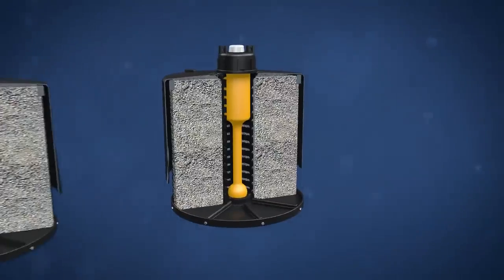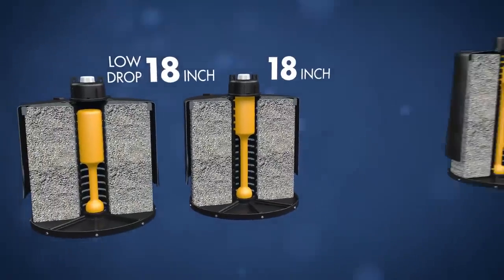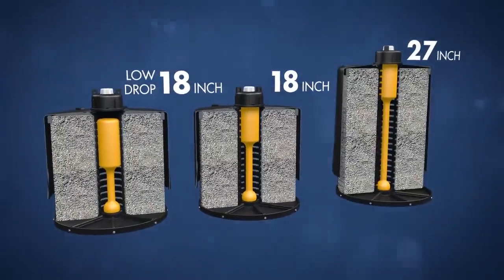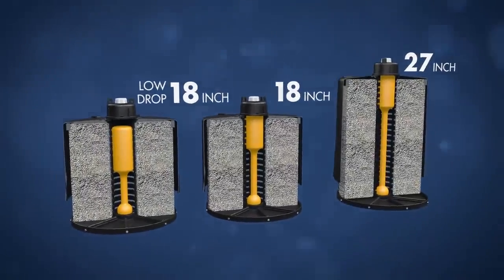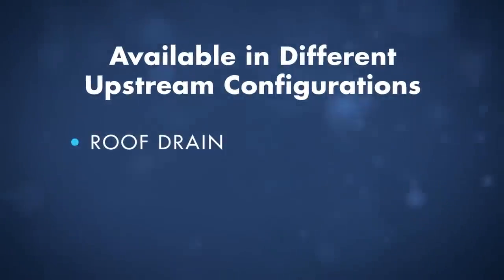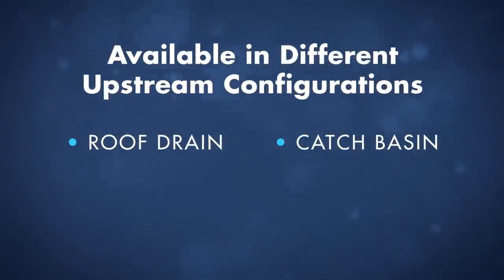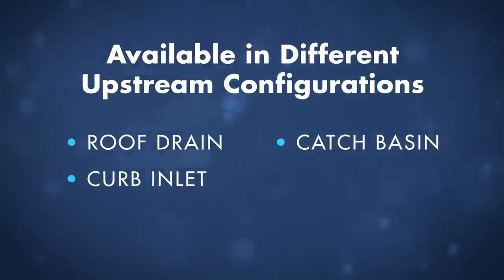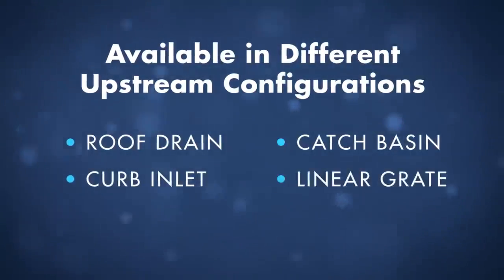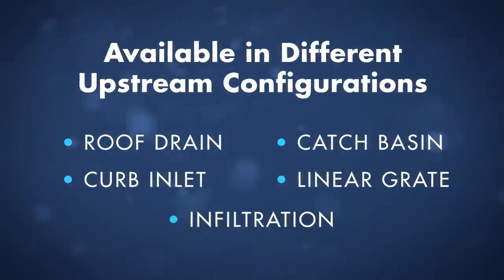The storm filter is available in multiple cartridge heights to meet site-specific hydraulic needs and is available in different upstream configurations, including roof drain, catch basin, curb inlet, linear grate, and infiltration.